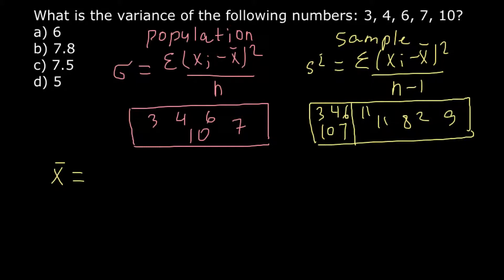x̄ would equal 3 plus 4 plus 6 plus 7 plus 10, divided by n, and we have 1, 2, 3, 4, 5. So divide it by 5. Don't be confused. First, here we have n minus 1, but here we have to find the mean of these numbers. We don't apply this rule n minus 1 in order to find the mean of these numbers. We just divide by the quantity of these numbers.